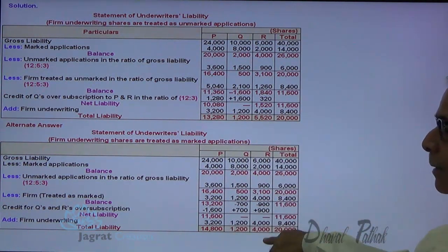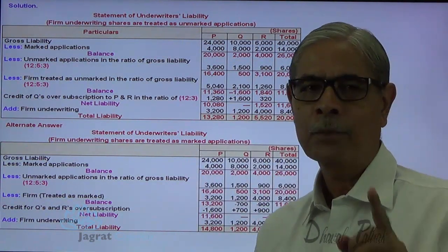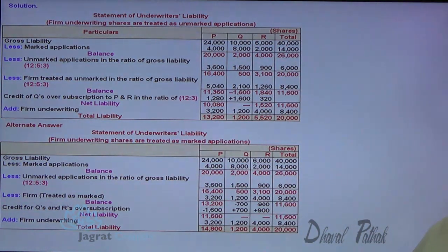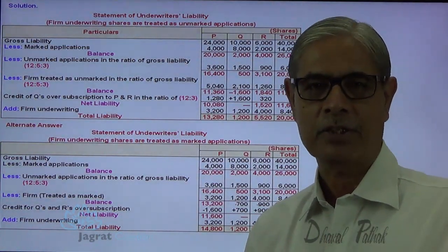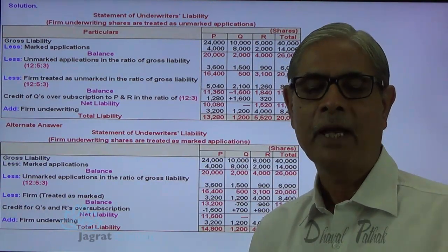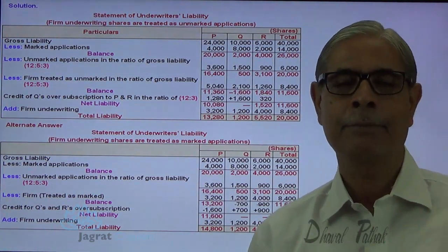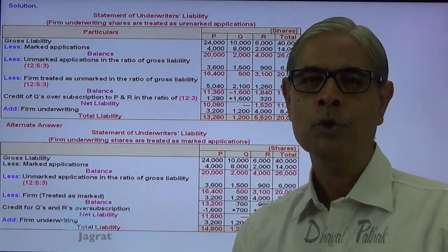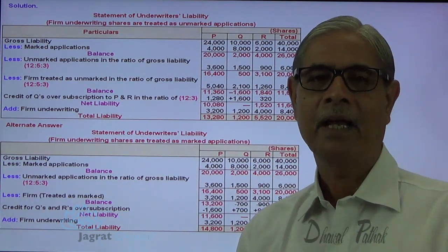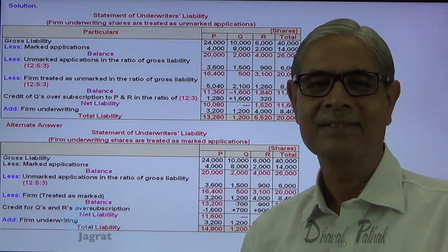There is a difference in liability because we have differently treated firm applications. Firm applications treated as unmarked gives one liability; firm applications treated as marked gives a different liability. In this sum you are not told what to do with firm applications, so I have solved it in both methods. In an examination, if you are given specific instructions as to how firm applications should be treated, or you can infer from the language of the sum, solve accordingly. If you are unable to interpret, solve by the method you have adopted and write a note for that. Thanks to all.